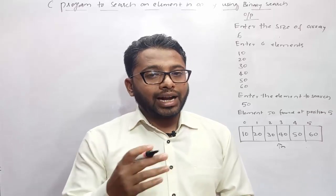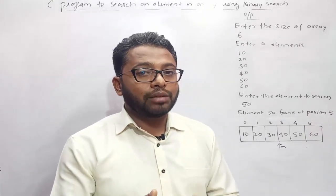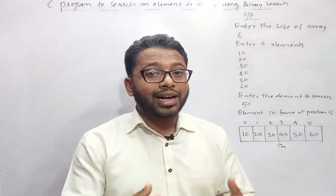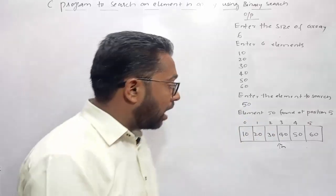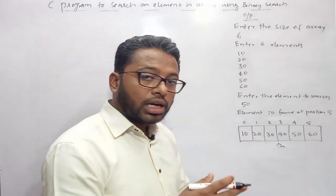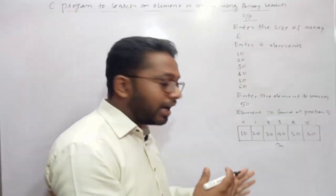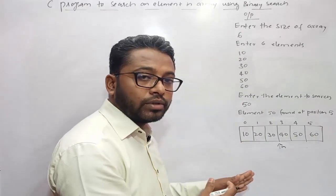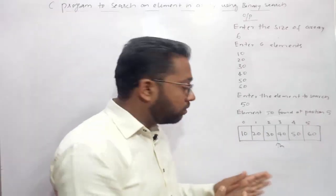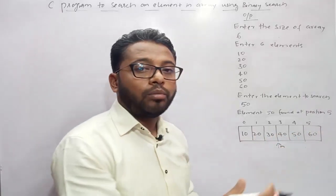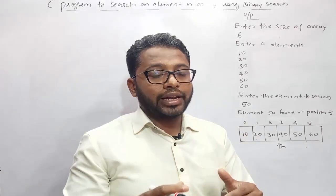The second case is the item which you are searching might be present on the left side of the middle element, and the third case is it might be present on the right side. To decide, you make a comparison: if the key item is lesser than the middle element, discard the right side and search on the left side. If the key item is greater than the middle element, discard the left part and perform binary search on the right side. For this reason, items in your array should be in sorted form.